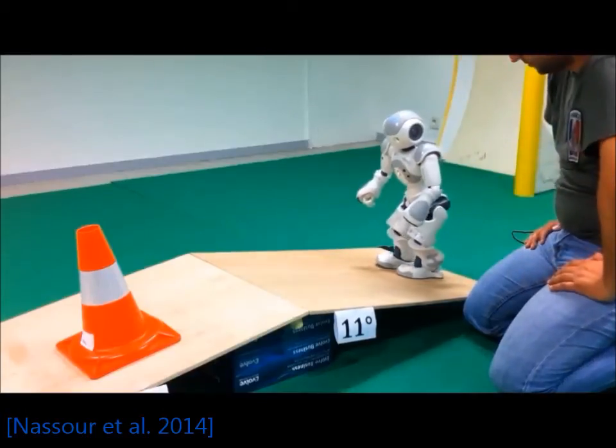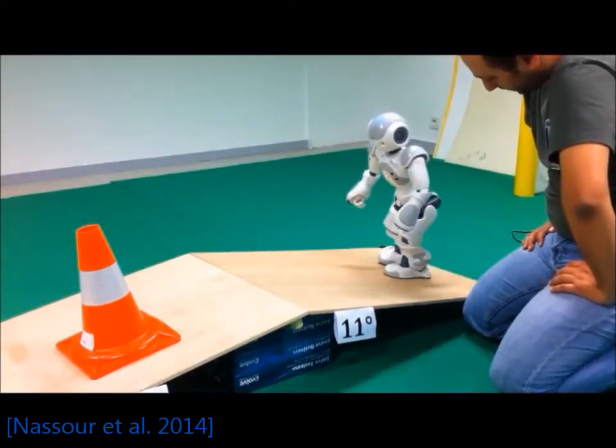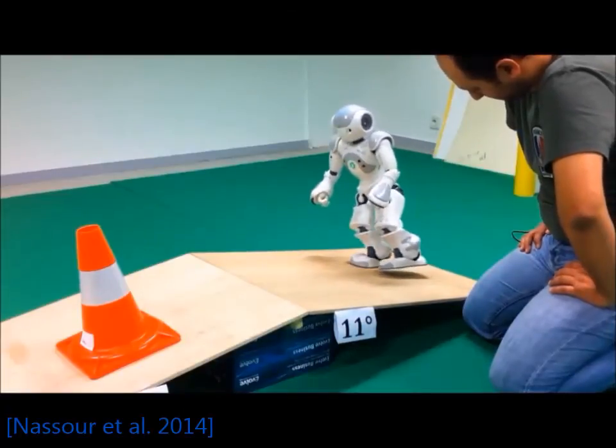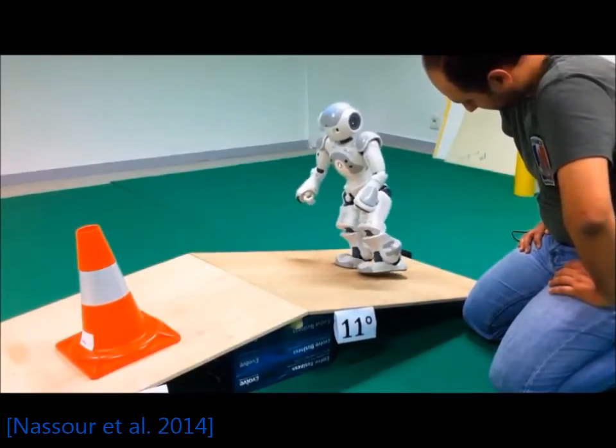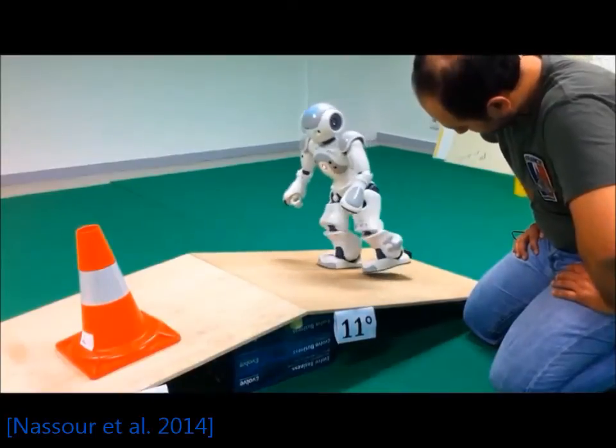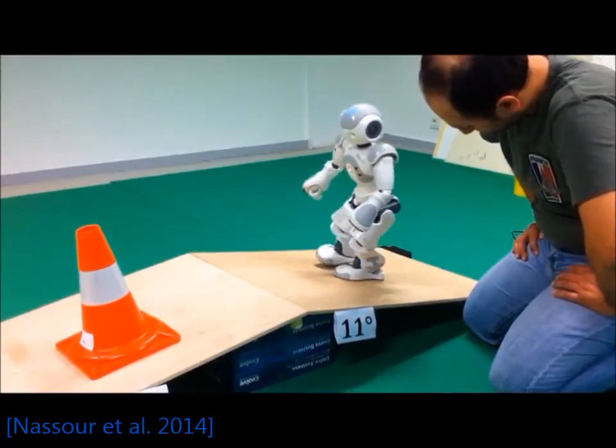As in walking on flat terrain, rhythmic patterns are also employed for walking on sloped terrain. In the case of walking uphill, the flexion rhythm will dominate the ankle joint, while the extension rhythm will dominate in case of walking downhill.